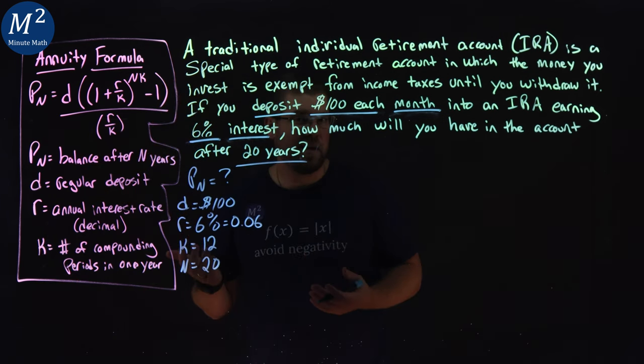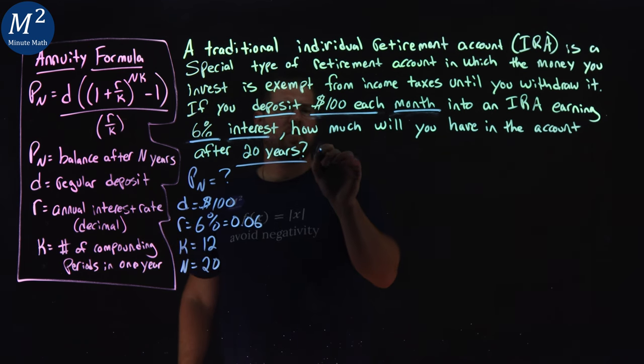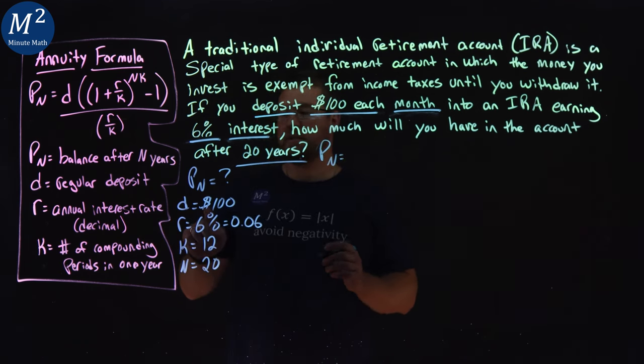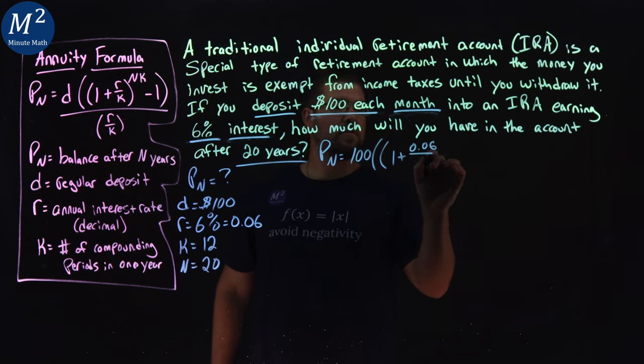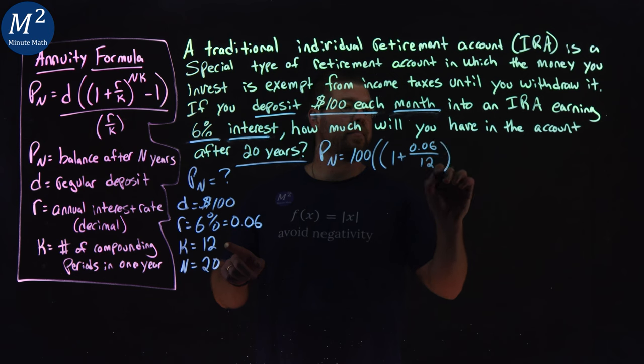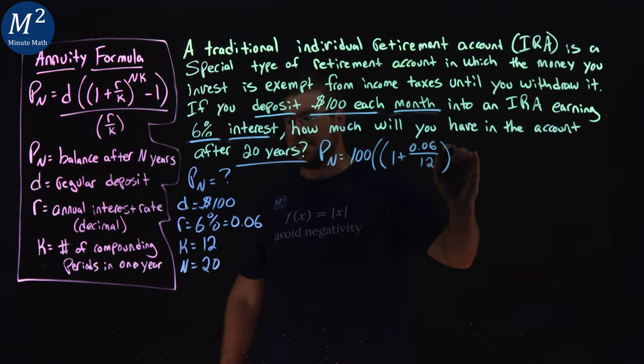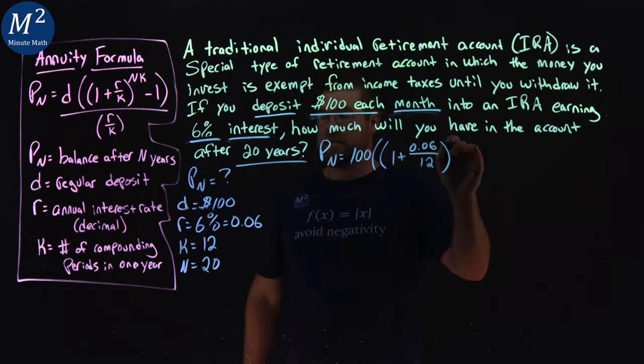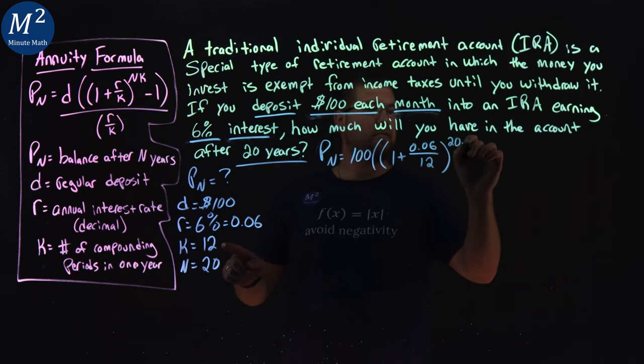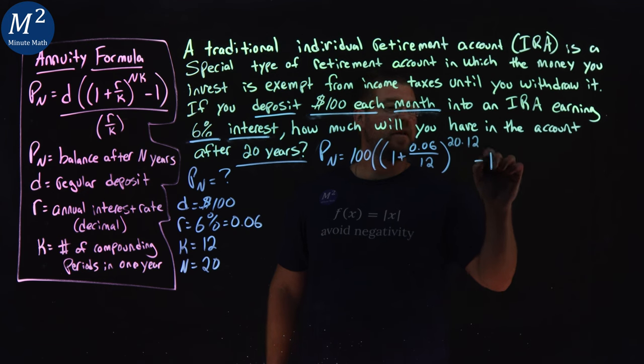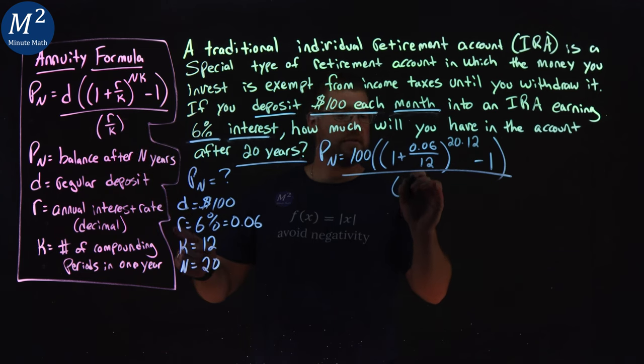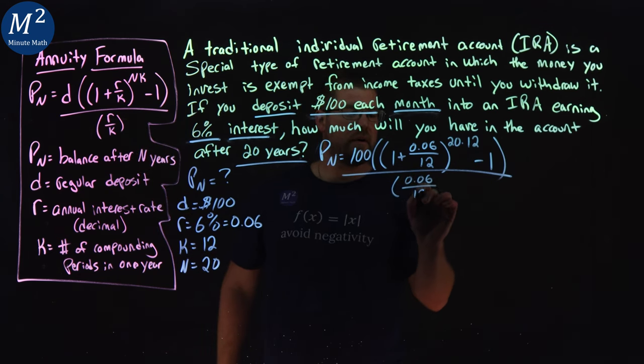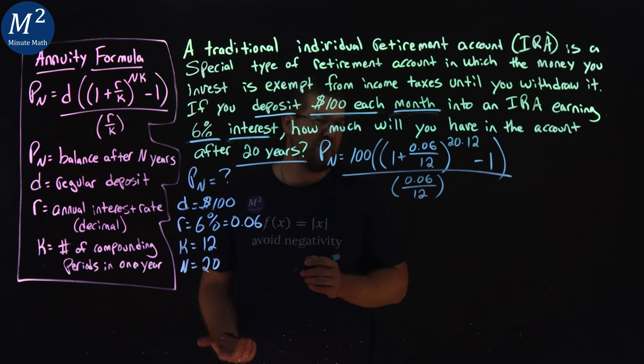We just need our formula and plug it in and simplify or solve. So P sub n here, our formula, is our d, 100, two parentheses, one plus our r value, 0.06, over our k value, which is 12, to the power of n times k, which is n of 20, times a k value of 12, minus 1, close it. And then over r over k again, which is 0.06, over a k value of 12. And from there we just want to simplify.